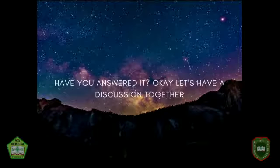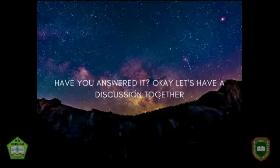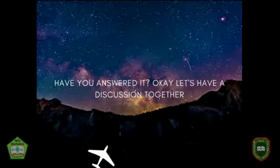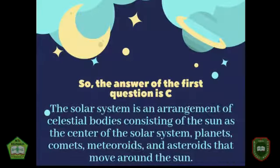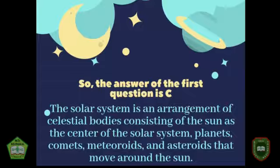Okay, let's have a discussion together. The answer to the first question is C. The solar system is an arrangement of sky objects consisting of the Sun as the center, planets, comets, meteoroids, and asteroids that move around the Sun. A spaceship does not comprise the solar system.